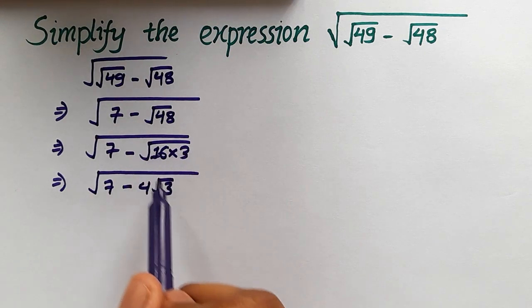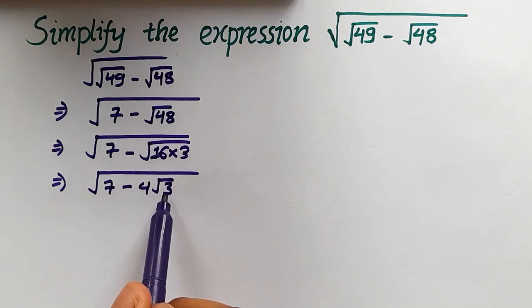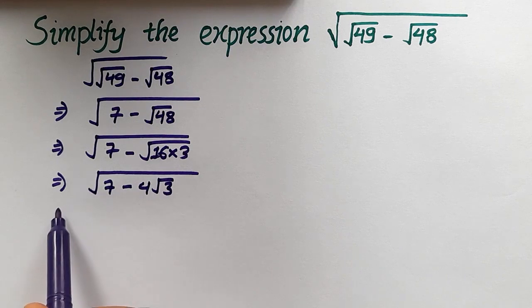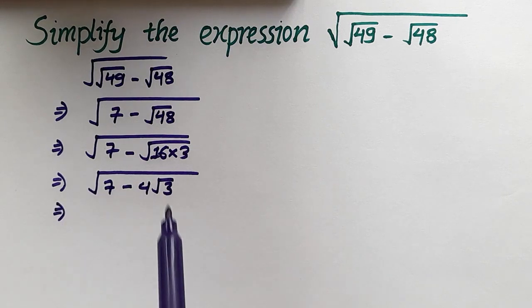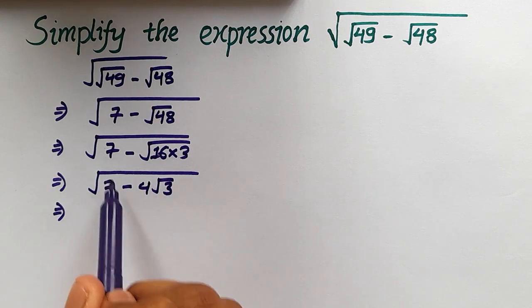This gives us 7 - 4√3 under the outer root. Now things get tricky—we cannot perform any more operations on the numbers directly, so we have to think about what we can do with the root.